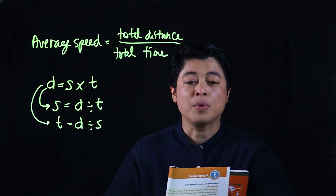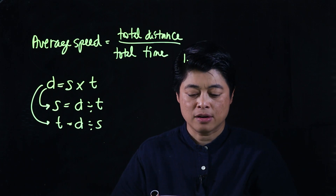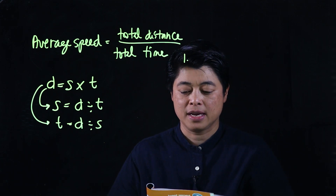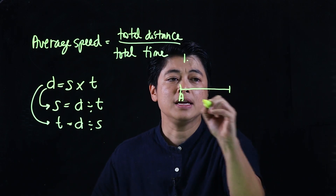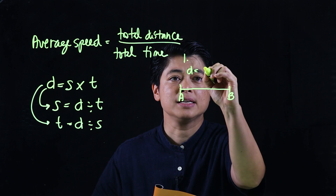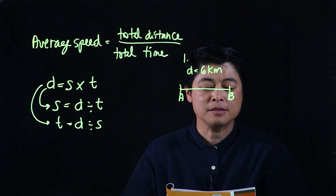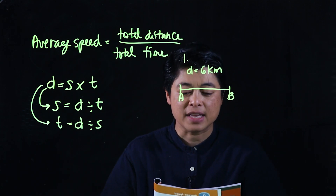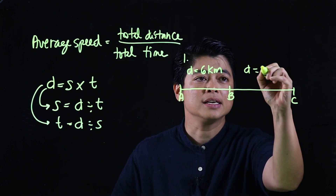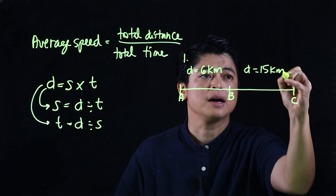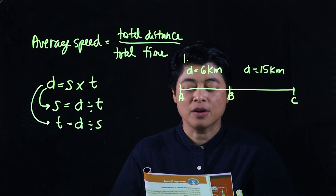Problem number one: the distance between Town A and Town B is about 6 kilometers. I'll draw A and B — distance is 6 kilometers. The distance between Town B and Town C is about 15 kilometers, so that's C — distance is 15 kilometers.